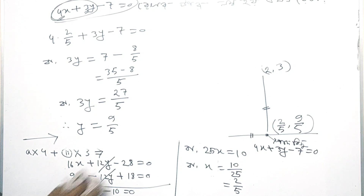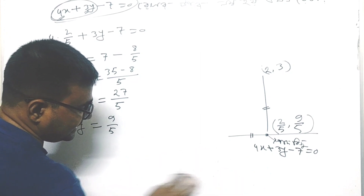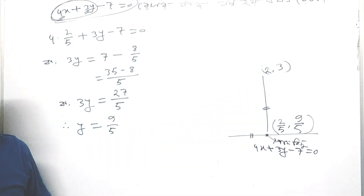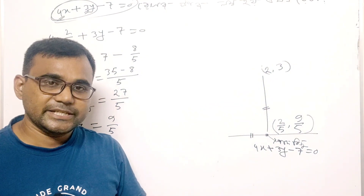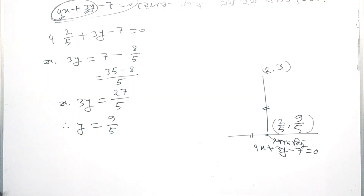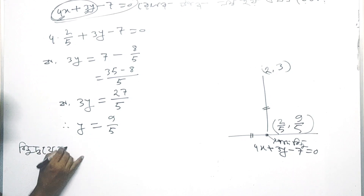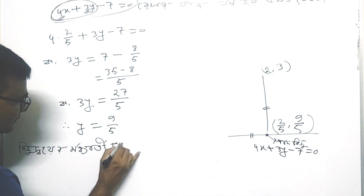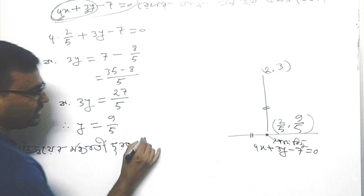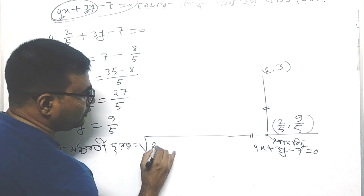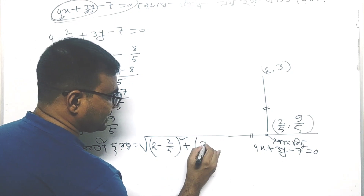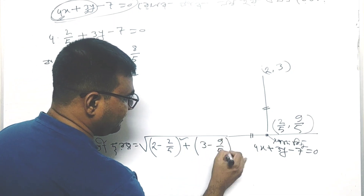Now we have found the foot of perpendicular. The two values obtained are 2/5 and 9/5. At these two coordinates, the whole calculation works out. So we have 3 minus 9 by 5, whole squared, in the distance formula.